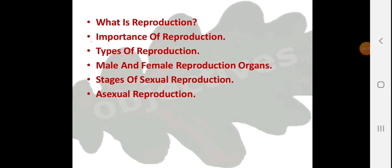This is about animal reproduction. First of all, these are the questions that should arise in your mind: What is reproduction? What is the importance of reproduction? What are the types of reproduction? What are male and female reproductive organs? What are the stages of sexual reproduction, and what is asexual reproduction? This presentation covers all your questions and answers.